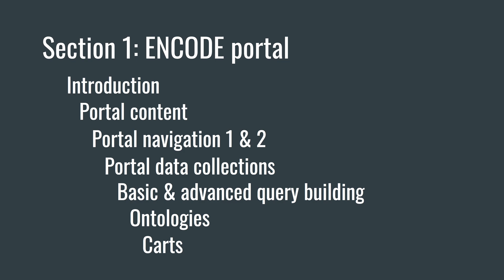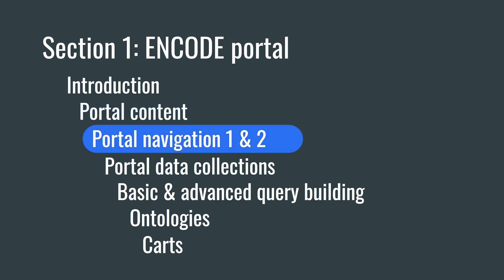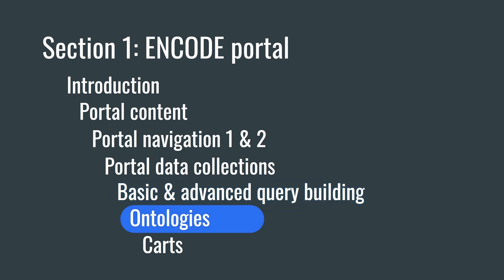The modules of this section are listed here. After this introduction video, the next modules are self-contained and can be viewed out of order to suit your needs. The Portal Content module will go into greater detail about the breadth of publicly available experiments and data. Portal Navigation modules will explain how to use the portal interface to browse available experiments and understand the layout of individual experiment pages. The Portal Data Collections module will focus on pages for specific collaborations or research efforts. Basic and Advanced Query Building will teach you how to use metadata to apply filters for the experiments you're interested in and how to access and download the data programmatically. Ontologies describes some of the controlled vocabularies with relationships between terms that we integrate into our system for consistency with the research community. And lastly, CARTs, which will teach you how to collect and save your experiments and files of interest for easier downloading and sharing.